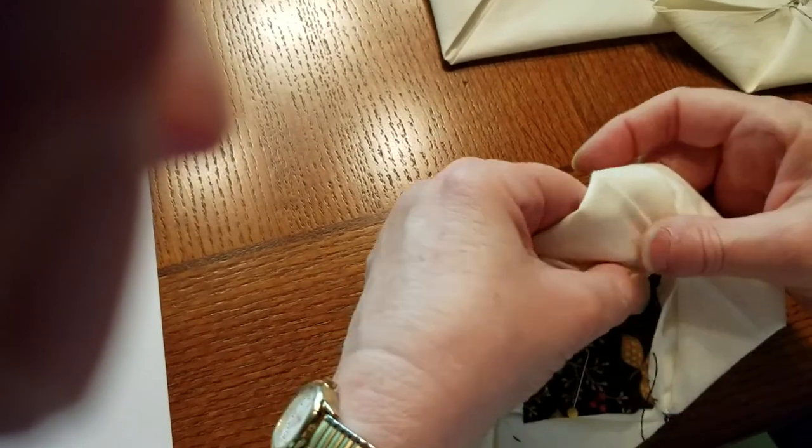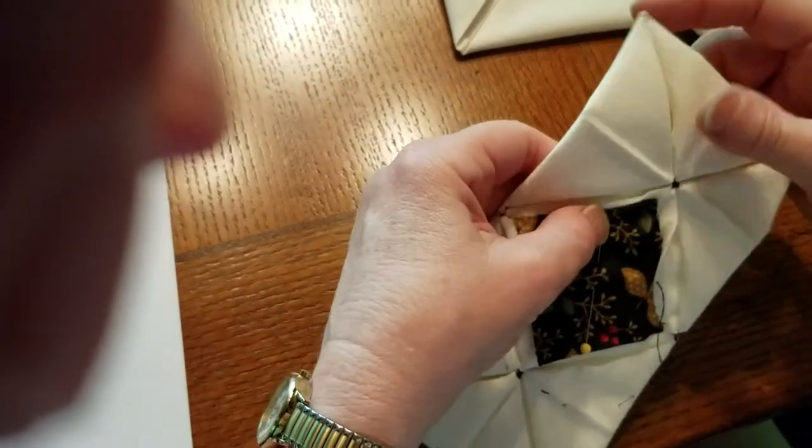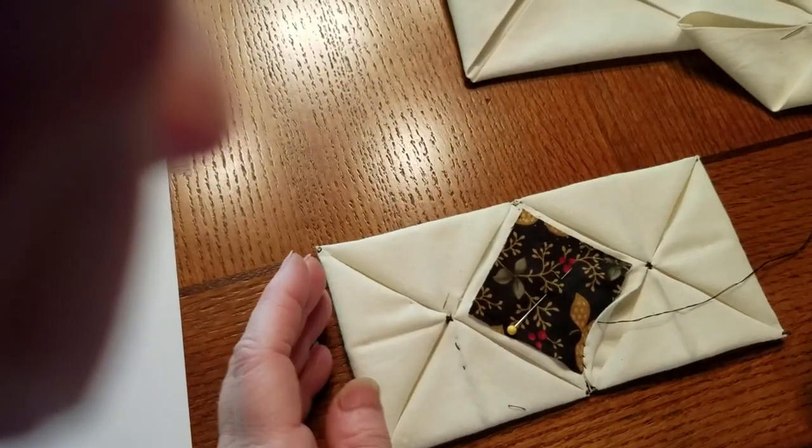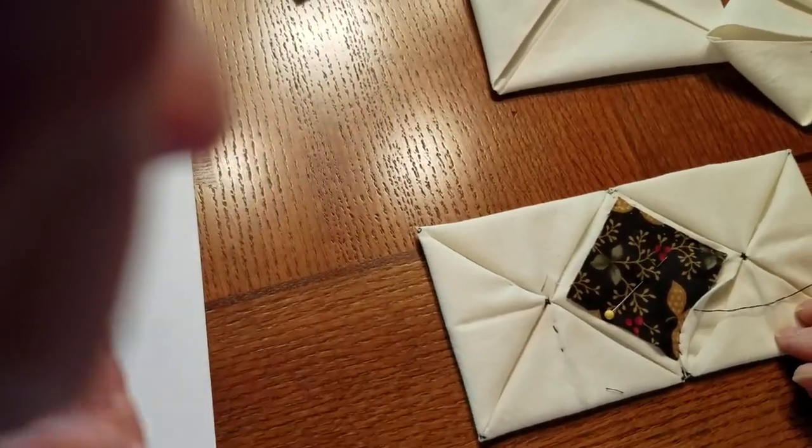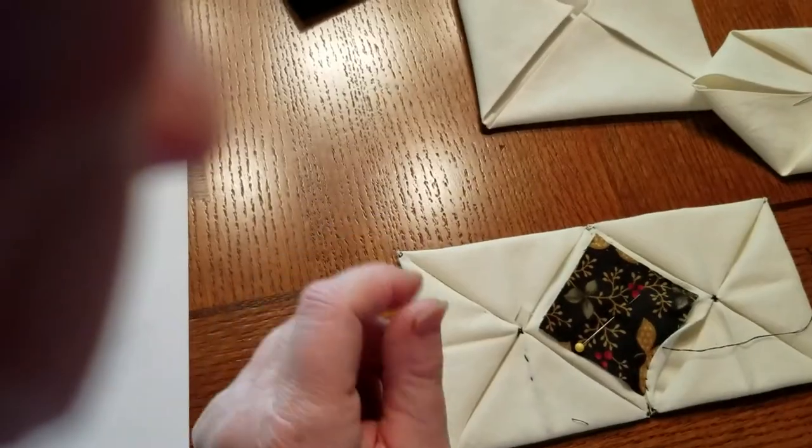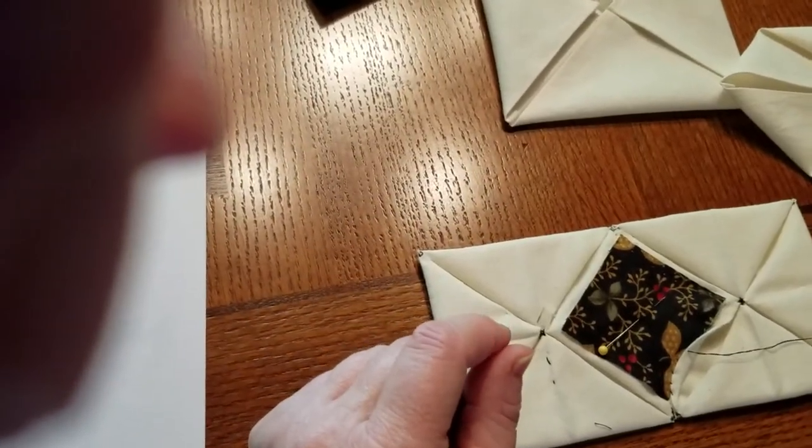And do a whip stitch there and then go on down and go around and pretty soon you've gone all the way around and you will have finished your first part. So then you add on your next piece and your next piece. And usually I do it in a row and then I take a row and put the row together.